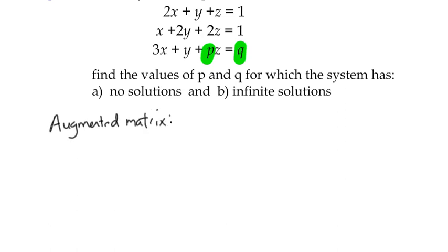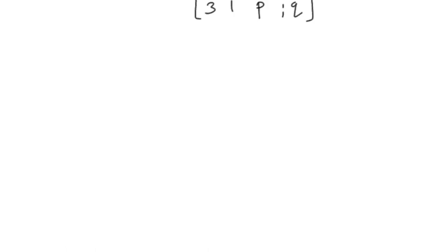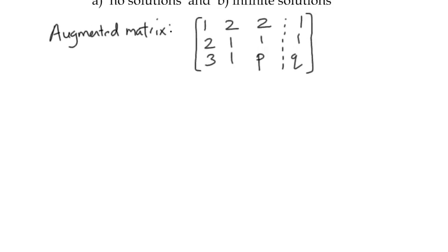I'm going to have a look at my coefficients and pick the smallest one first. The second one's obviously a 1. I'm going to go with that one first. 1, 2, 2, 1. It doesn't matter what the order of others are. I would put the ones with the P and Q last. So I've got 2, 1, 1, 1, and 3, 1, P, and Q. So now I don't just have numbers in my matrix. I've got a couple of letters. But we can still work through and get our upper triangular matrix.